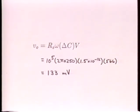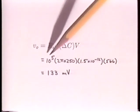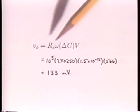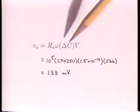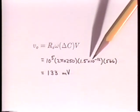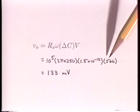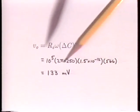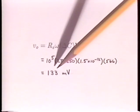What change in voltage should we measure when the array is inserted? Here's what we predict. For our experiment, R sub S is 100 kilohms, the frequency F is 250 hertz, Delta C is 1.5 picofarads, and V is 400 volts RMS, or 566 volts peak. For this applied voltage, this change in capacitance should result in a change in voltage of 133 millivolts peak.